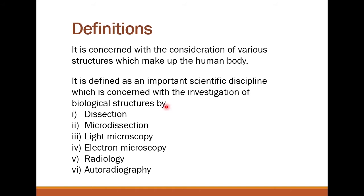If you are studying anatomy at the micro level, you are doing histological dissection. We can use the light microscope or compound microscope to check histology. For deeper knowledge of tissues or cells, we use the electron microscope.